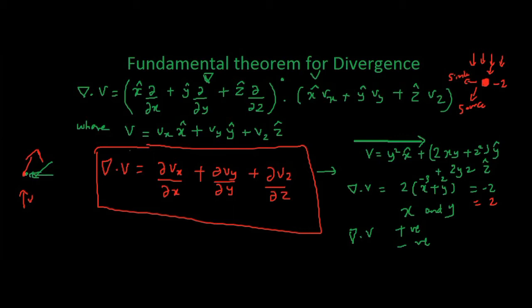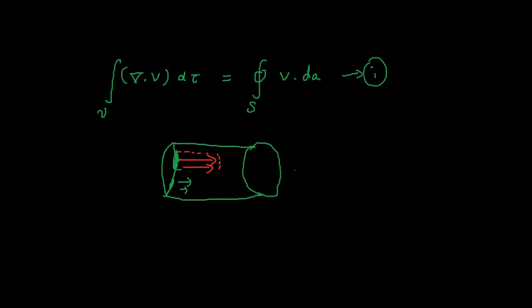Keeping this in mind, let us jump on to the fundamental theorem for divergence. The fundamental theorem for divergence states that the integral of divergence of vector V over a volume V is equal to the surface integral of the vector V. That is the theorem, and it is called the fundamental theorem for divergence.